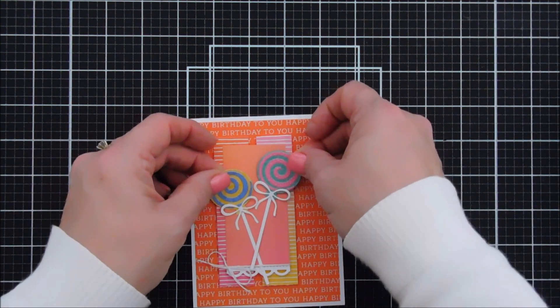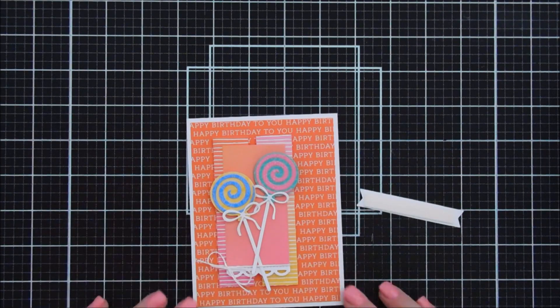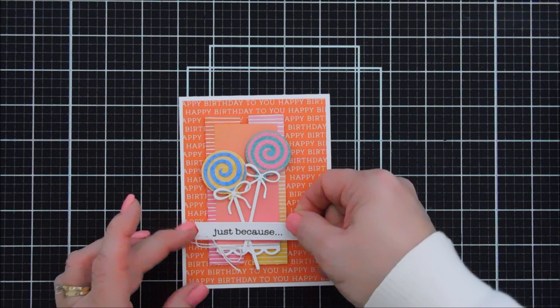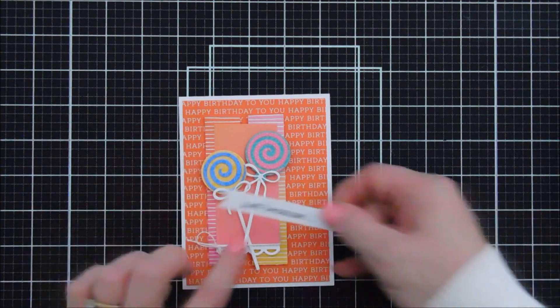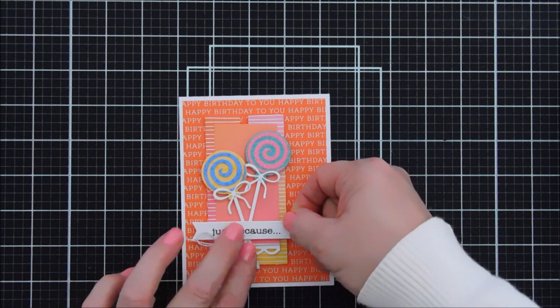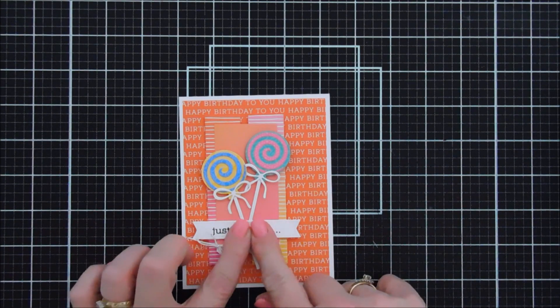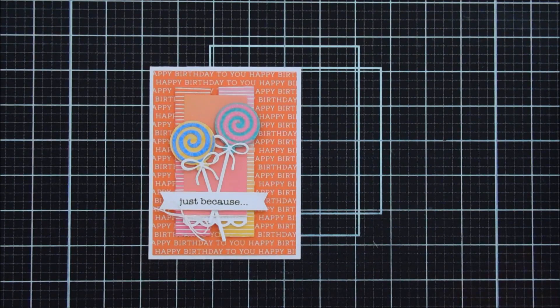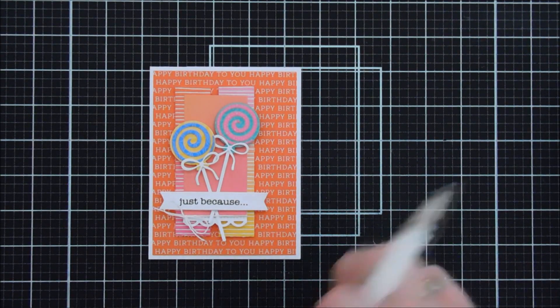I'm going to go ahead and add my lollies on top of my panel there and I did go ahead and stamp my sentiment on a banner die. It says just because dot dot dot. I just stamped with my VersaFine Onyx Black ink and I added that to the base of those lollies there. Now after we have this done we're going to add some bells and whistles.